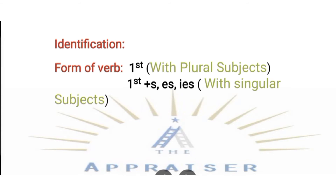Now let's discuss the identification and the form of verb of the Present Indefinite Tense. We can identify the Present Indefinite Tense by looking at the Urdu sentence. At the end of the Urdu sentence comes 'ta hai,' 'ti hai,' or 'te hai' in the Present Indefinite Tense.